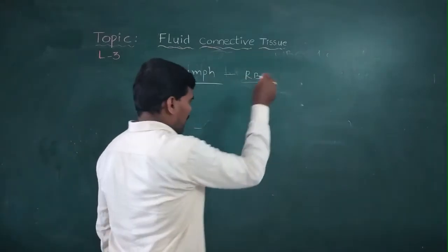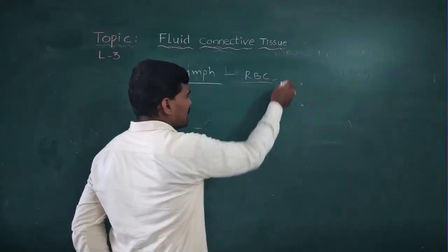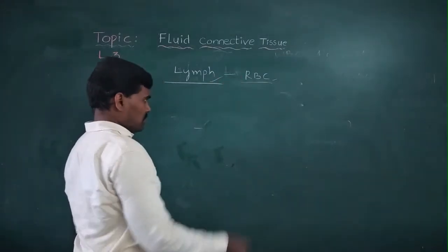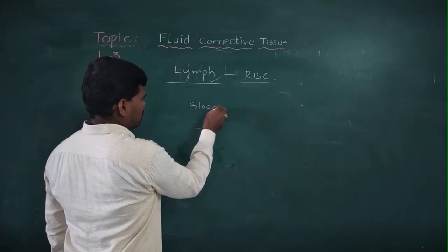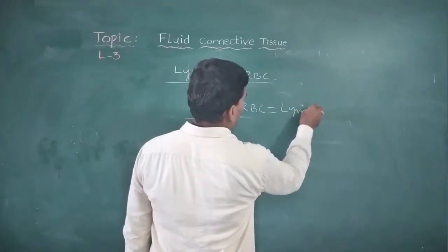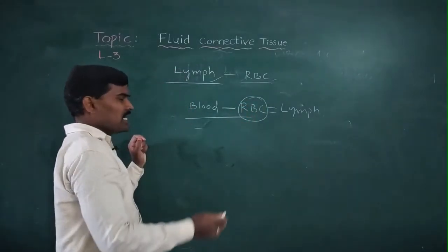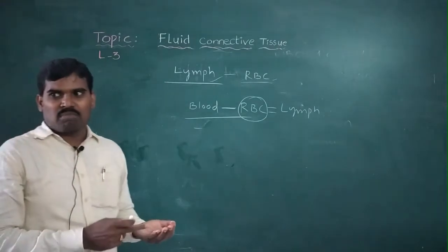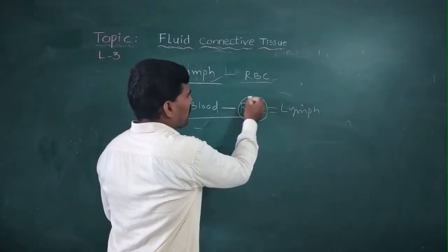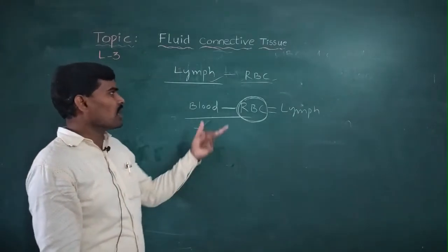Lymph is blood minus RBCs and minus certain macromolecules. Blood contains plasma and blood cells — RBCs, WBCs, and platelets. When RBCs and some macromolecules are removed, the remaining fluid matrix is called Lymph.